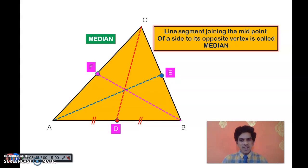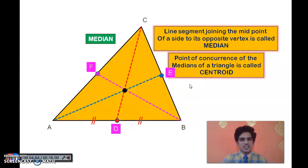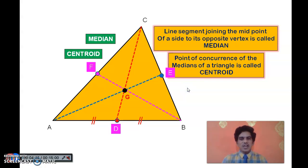The interesting fact is that these three medians actually have a common point — they are passing through a single point. So this is a point of concurrence and these medians are concurrent lines. This particular point of concurrence is called the centroid. Centroid is the point of concurrence of the medians of a triangle, and it is generally denoted by the letter G.